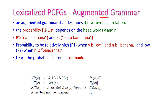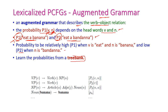Augmented grammar describes the relationship between the verb and object — that is, the probability p1(v, n), where v is the head word of the verb and n is the head word of the noun. Taking two sentences: p1 is 'eat a banana' and p2 is 'eat a bandana'. The p1 value will be very high compared to p2, meaning 'eat a banana' is more familiar than 'eat a bandana'. These probabilities are learned from a tree bank.